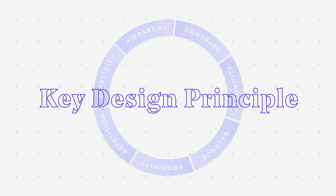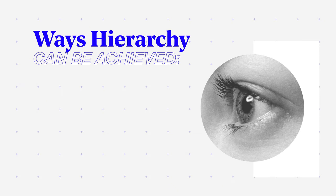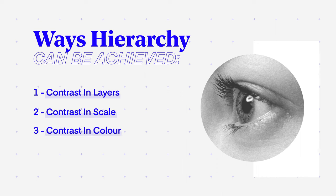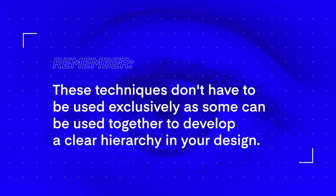In a previous video, I discussed one of the key design principles: hierarchy. In that video, we looked at the key ways hierarchy can be achieved in poster design. Hierarchy can be achieved in a variety of ways using contrast in layers, contrast in scale, contrast in color, contrast in space, and contrast in direction. Now it's important to mention that these techniques don't have to be used exclusively, as some can be used together to develop a clear hierarchy in your design.